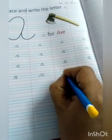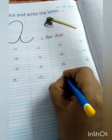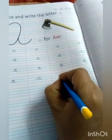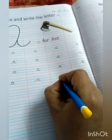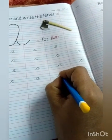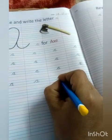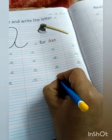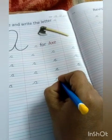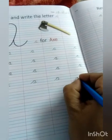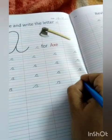First of all, you have a slanting line. Then you have a small curve. Then the same line going up, and then you come back to make the tail. Do you understand?